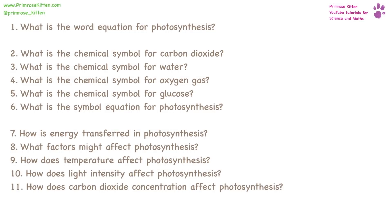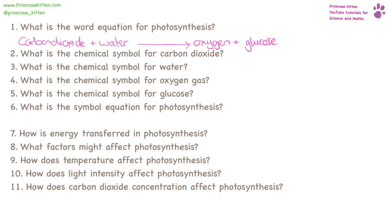What is the word equation for photosynthesis? This comes up a lot, so it's really important that you know it. Carbon dioxide plus water turns into oxygen plus glucose. We can put light above the arrow — it is really important that it goes above the arrow, not on either side of the equation.